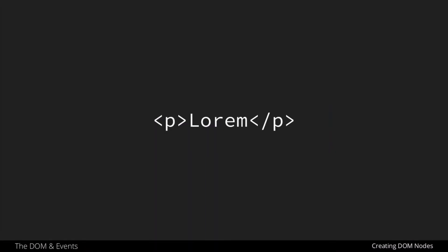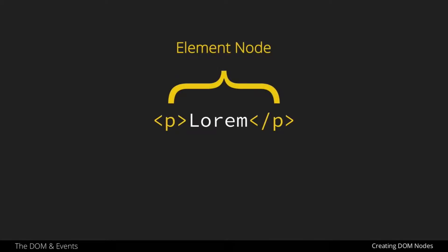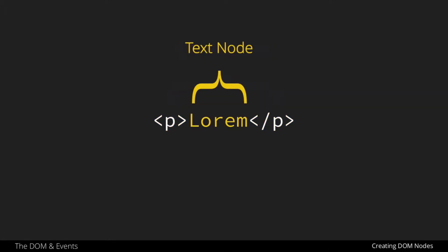To do a quick review, if we have something like this, which is an element node with a text node inside of it, we can see that the opening and closing paragraph tags are the element node itself. And then the text that goes inside of it is the text node. These are two separate nodes in the DOM, and it's important that we remember that when we begin adding them and creating them ourselves.